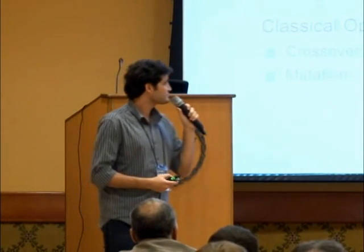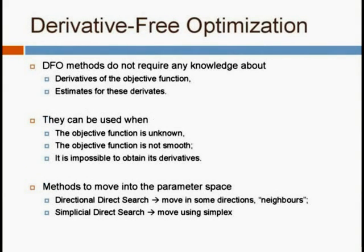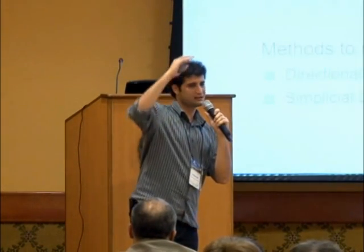Genetic algorithms are stochastic methods that work like natural selection: the worst individuals are discarded, the fittest ones generate new ones, using genetic operators like crossover and mutation. Derivative-free optimization methods do not require any knowledge about derivatives of the function, nor estimates for these derivatives. They are also well-suited when the objective function is unknown — like black box functions — when the objective function is not smooth, and when it is not possible to obtain their derivatives. These methods involve moving through the parameter space: directional direct search moves in specific directions to find neighboring points, and simplicial direct search moves using a simplex.